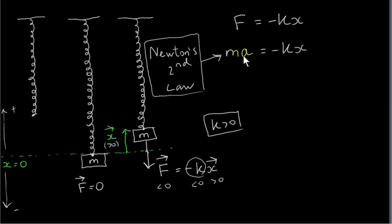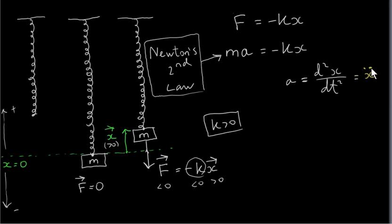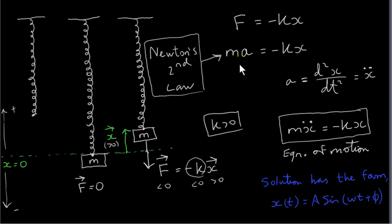The acceleration is the second derivative of position x with respect to time, d²x/dt². Another way to write this is x double-dot — the dots indicate differentiation with respect to time, so two dots mean we differentiate x twice with respect to time. We can write the equation of motion as M times x double-dot equals minus kx.